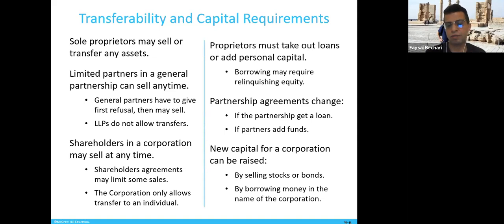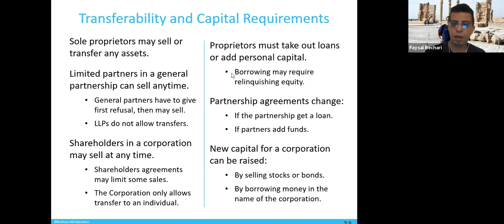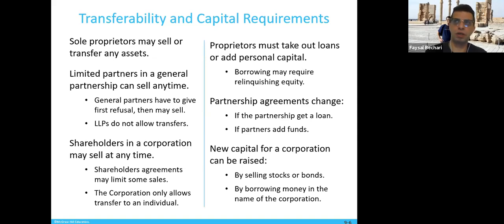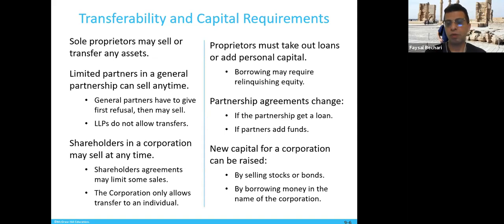In a corporation, shareholders may sell shares anytime because you own shares, not the company. Shareholders agreements may limit some sales according to the agreement. In Canada, the corporation only allows transfer to an individual — you cannot sell shares to another corporation. A proprietor must take out a loan or add personal capital — either get a business loan from a bank by presenting your business plan, or add capital personally.